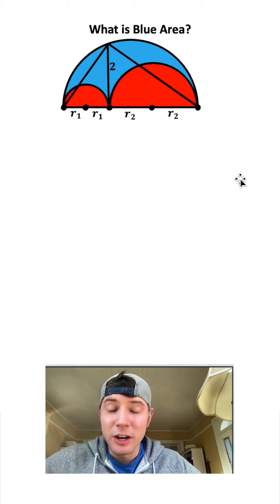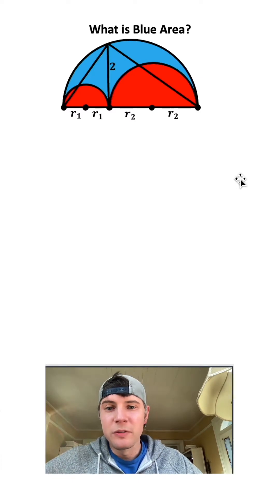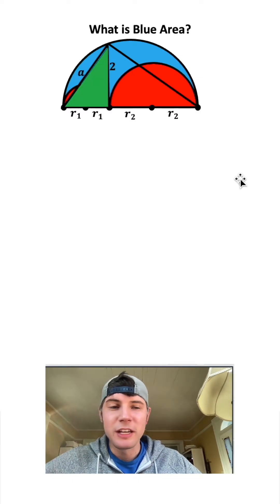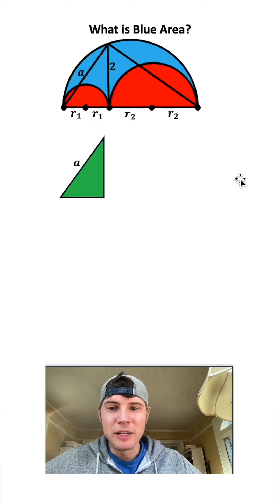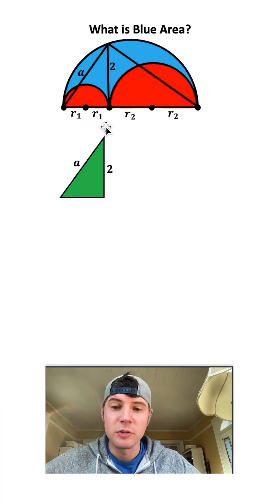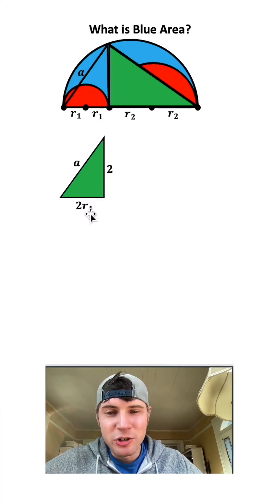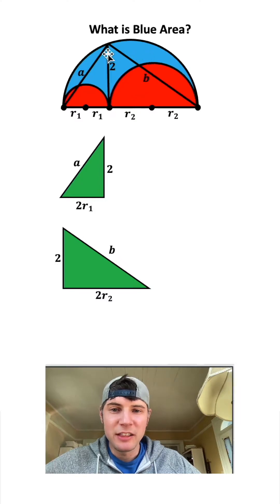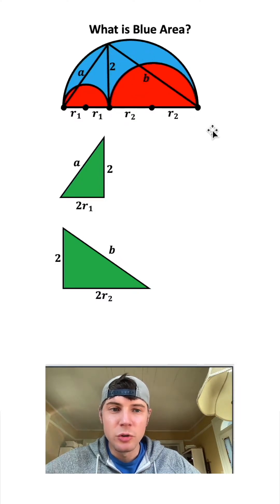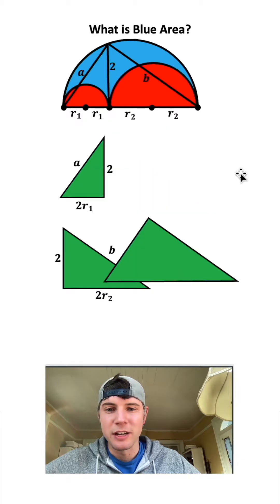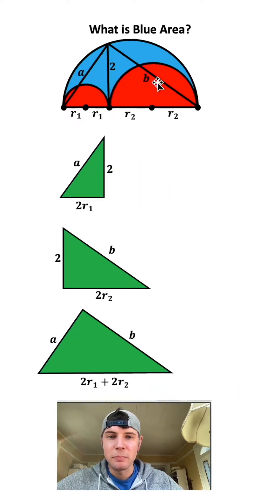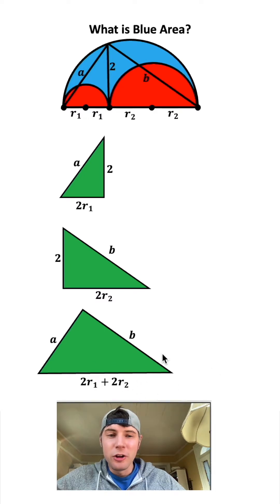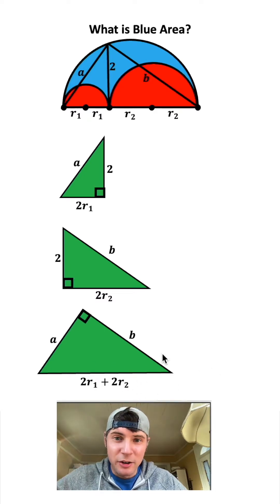Next, let's connect these chords. Inside we have now created three triangles. We have this green one — let's call its hypotenuse a. This side is equal to two and this bottom has two of these r₁, so we'll call it 2r₁. We have another triangle — let's call this side b. It's made up of side lengths b, two, and 2r₂. We have one more big triangle made up of a on the left, b on the right, and 2r₁ plus 2r₂ on the bottom.